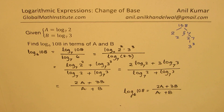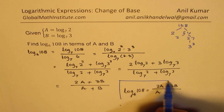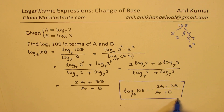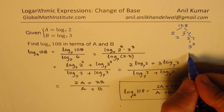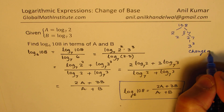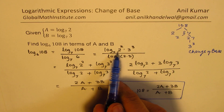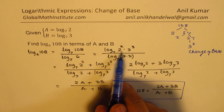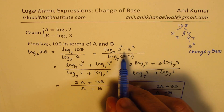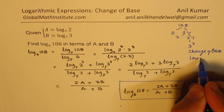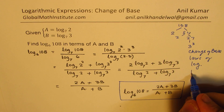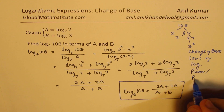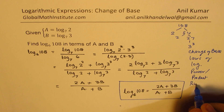That is how we get the solution. I hope the steps are absolutely clear. We applied a few rules here: first, change of base, then we factored the numbers and wrote them as products. Then we used the laws of logarithms — specifically the power and product rules — to arrive at the solution.